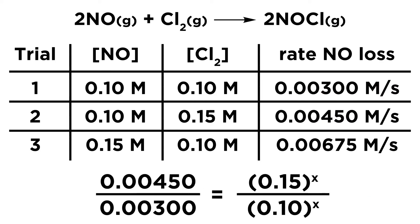So we can use this technique. All we have to do is take the rate from trial 2 over the rate from trial 1, and that is going to be equal to the concentration of Cl2 from the second trial raised to the x power over the concentration of Cl2 from the first trial also raised to the x power. And if we solve this equation for x, we will find the order with respect to Cl2.